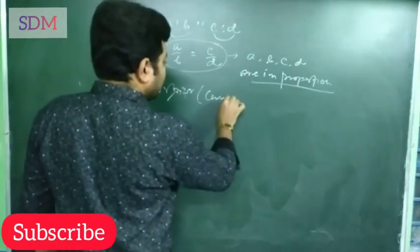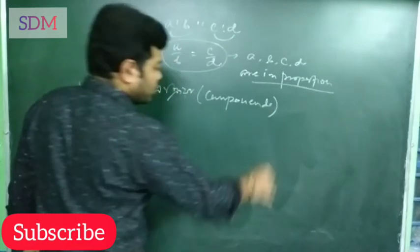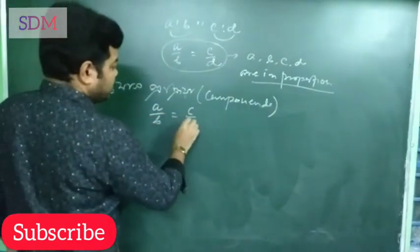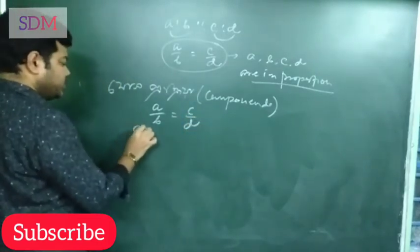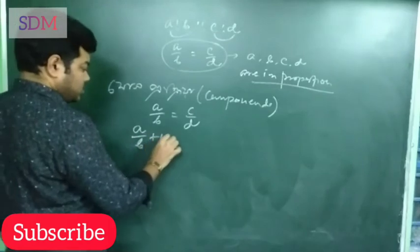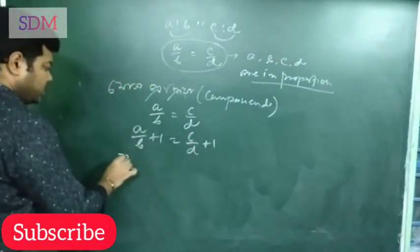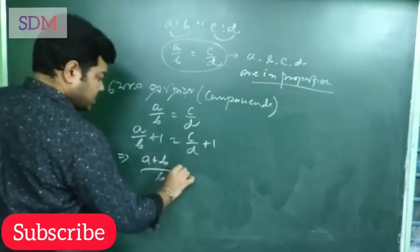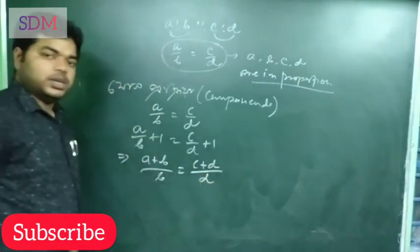Component. Component here, A by B equal to C by D. Clear. Here, A by B plus 1 equal to C by D plus 1.